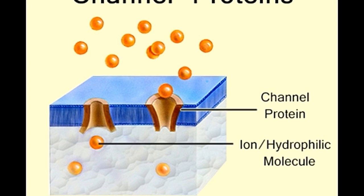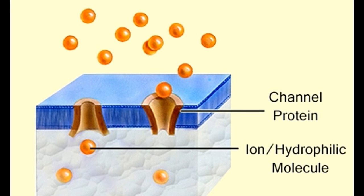Channel proteins interact the least with the solute they transfer. Nature of solute: carrier proteins transfer both polar and non-polar solutes across a biological membrane. Channel proteins transfer only small and polar solutes across a biological membrane.